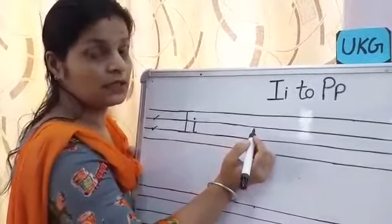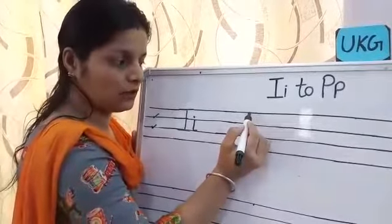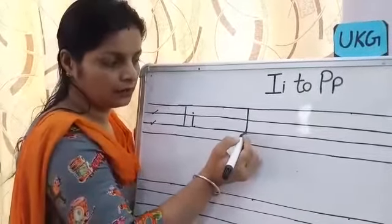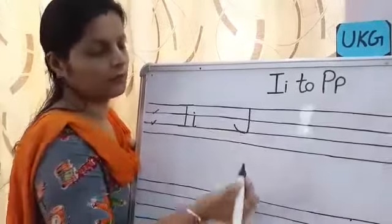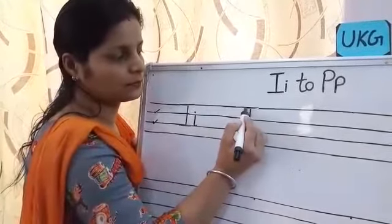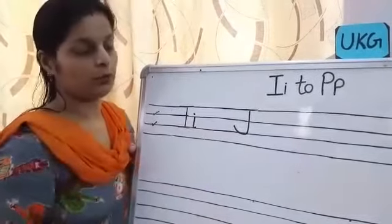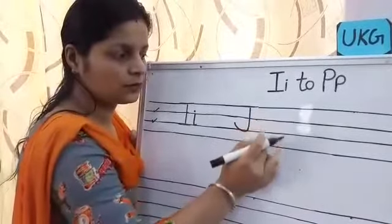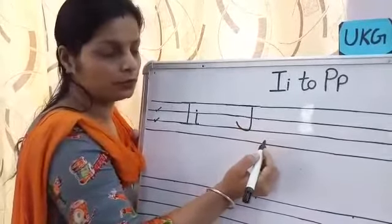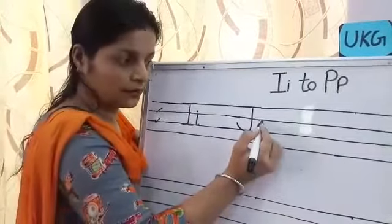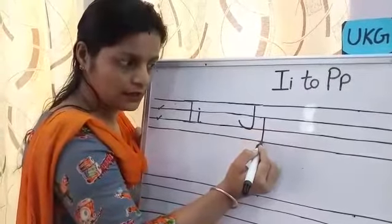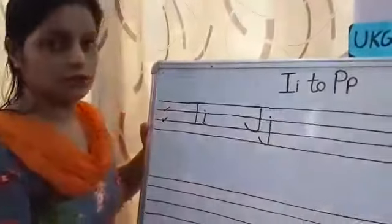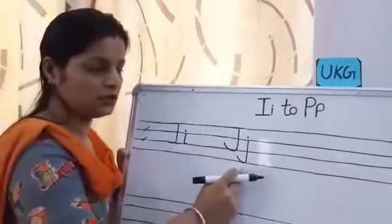Now the next letter is J. For capital J, we will draw a standing line and take a curve, with one slanting line on the top red line. For small letter J, we will use the second, third and fourth line — similarly, a standing line, take a turn, and put a dot on it. This is our J — jug.